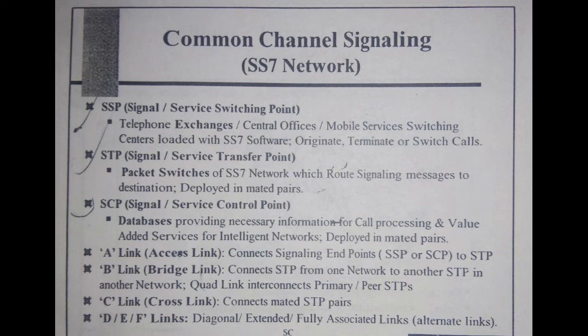The signaling links are: A link (access link), B link (bridge link), C link (cross link), and D, E, F links which are extended, diagonal, or fully associated links — also referred to as alternate links. A links connect SSP to STP. B links connect an STP from one network to another STP. C links connect mated STP pairs. D, E, and F links are associated signaling links used as alternate links.